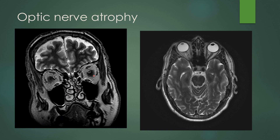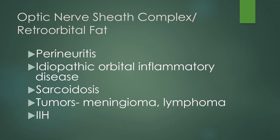The optic nerve should be pretty symmetric in size. So if one optic nerve measures larger than the other, you have to decide whether the abnormal one is the larger or the smaller one. In this case, you have dilation of the optic nerve sheath with a small optic nerve — this is optic nerve atrophy on the right side with unknown cause.